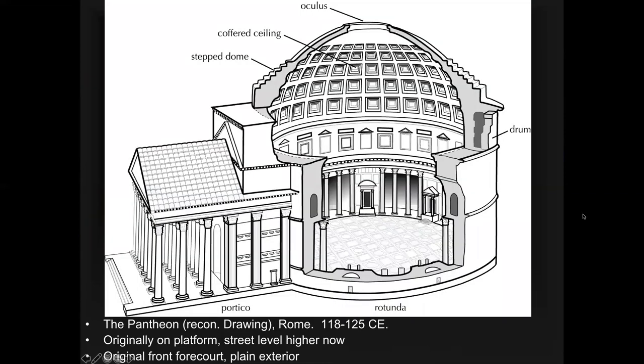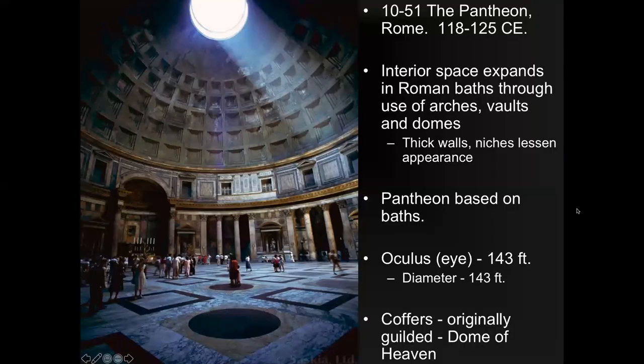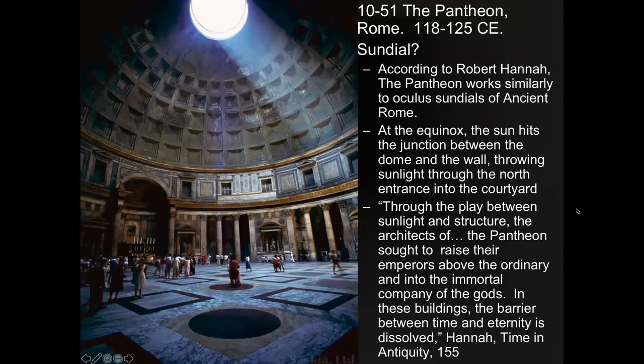It's a way to connect the emperor with the gods, similar to what the ancient Egyptians would do. Through the interplay between sunlight and structure, the architects of the Pantheon sought to raise their emperors above the ordinary into the immortal company of the gods. In these buildings, the barrier between time and eternity is dissolved.